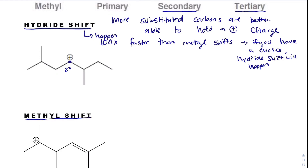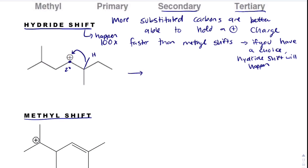The positive charge is on a secondary carbon. The carbocation looks at its next-door neighbors — if moving the positive charge to the right gives a tertiary carbon, that's more stable. One hydrogen bond moves its electrons and hydrogen to where the positive charge is — they swap places. The positive charge is now on the new carbon, and the hydrogen has moved. This is a hydride shift, going from secondary to tertiary.